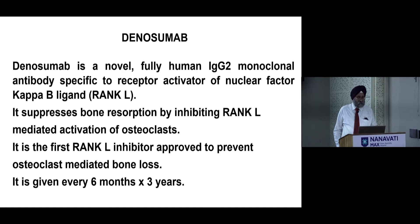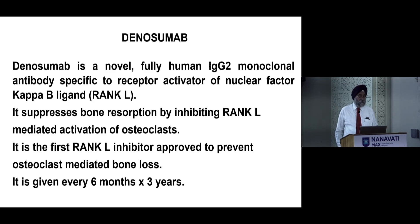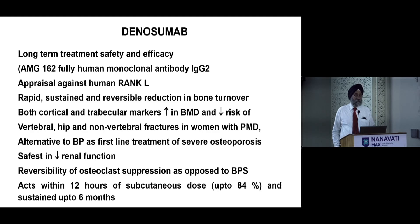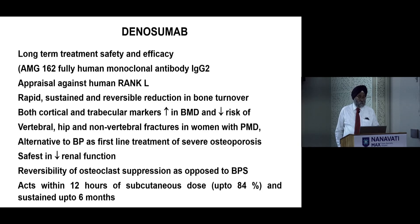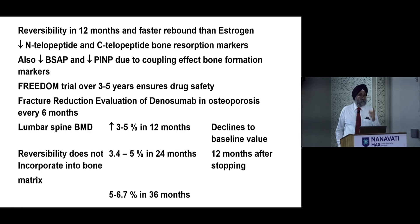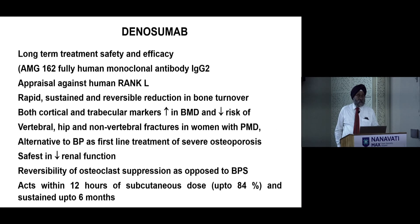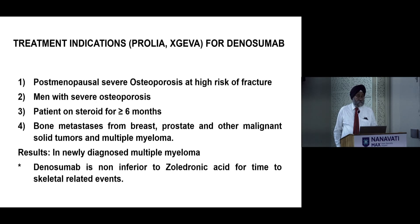Denosumab is currently widely used. It acts by inhibiting RANK-L mediated activation of osteoclasts, is given every six months for standard osteoporosis — or monthly for metastasis — and is usually given for three years. It is safest in patients with reduced renal function, and offers reversibility of osteoclast suppression, unlike bisphosphonates. It acts within 12 hours, with visible activation-level changes by two weeks, and reversibility within 12 months, as demonstrated in the FREEDOM trial.